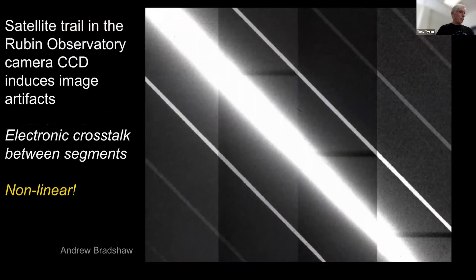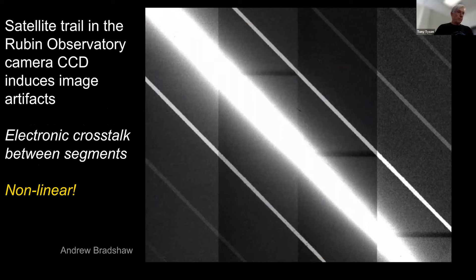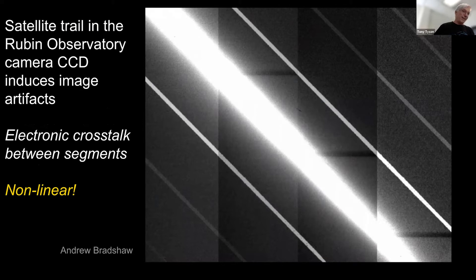This is a picture of what we saw when we illuminated one of the production LSST cam CCDs in our system. You see the main trail there, really bright, and then you see the crosstalk due to the channel-to-channel video crosstalks. And it's not linear — that's the problem. If it were linear, we could just measure the coefficients and go home.